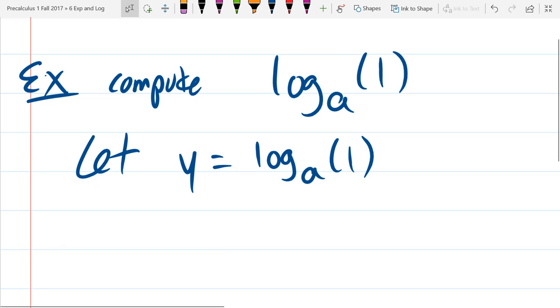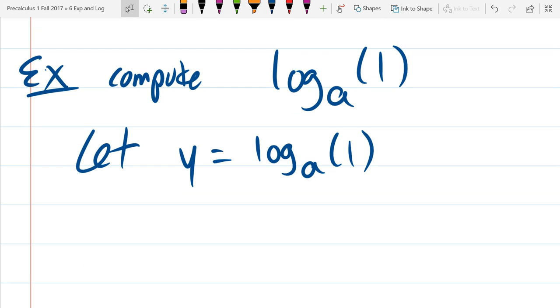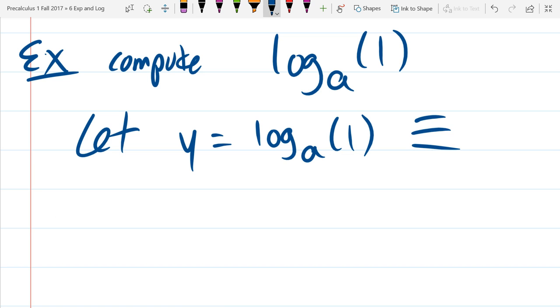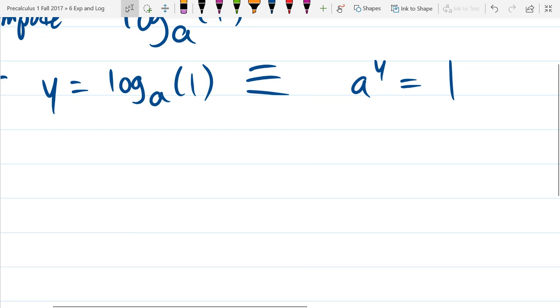You can use whatever letter you want. a would be a bad letter to use because it's already in use. But x, y, z, even b will work. Now I want you to flip this around into an exponential and then tell me what y is. The definition is the most important thing to remember. So we turn it into exponential. We're assuming a is a good base.